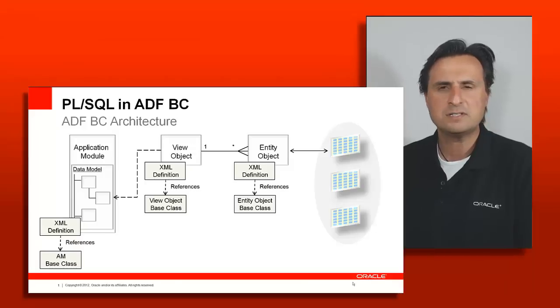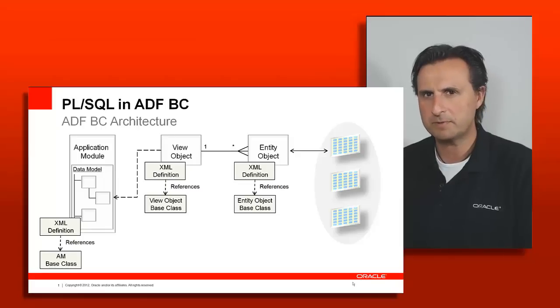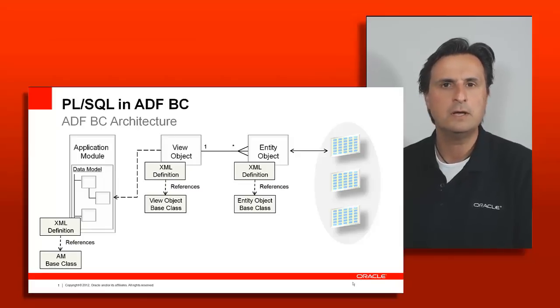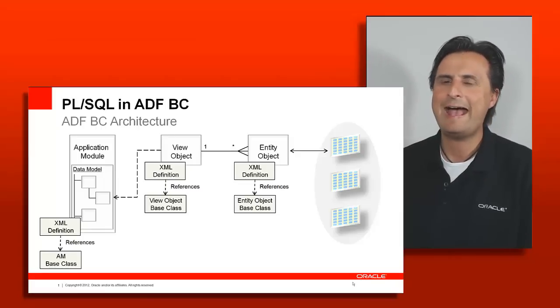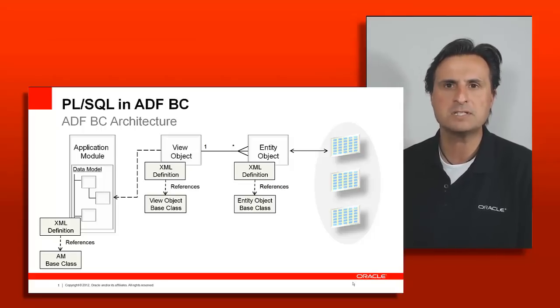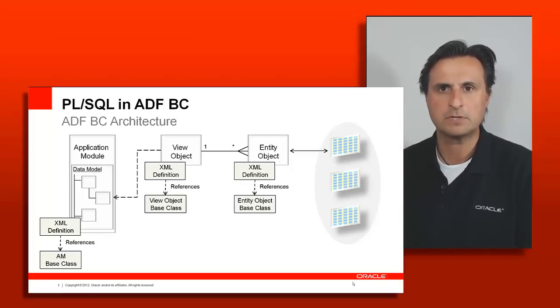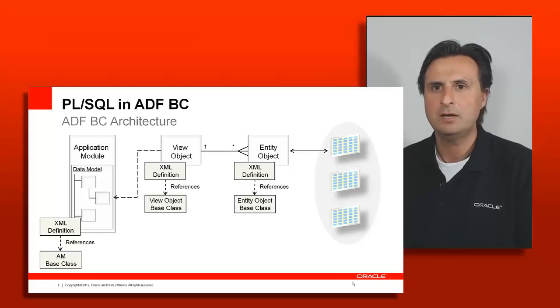Before we dive into the topic, let's have a look at the ADF Business Components architecture. As you can see from the picture, there are three main components in ADF Business Components as a framework. These are entities, view objects, and application modules. When you design them you mostly configure XML metadata, and at runtime this XML metadata will use one of the framework classes provided with the product — either the entity impl class, the view object impl class, or an application module impl class.